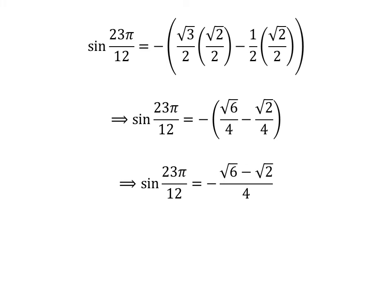As the denominator of both fractions in the above expression is the same, sine of 23π/12 is equal to minus of (√6 minus √2) upon 4. Multiplying the numerator by minus sign and taking out the common factor √2 gives us sine of 23π/12 is equal to √2 times (1 minus √3) upon 4.